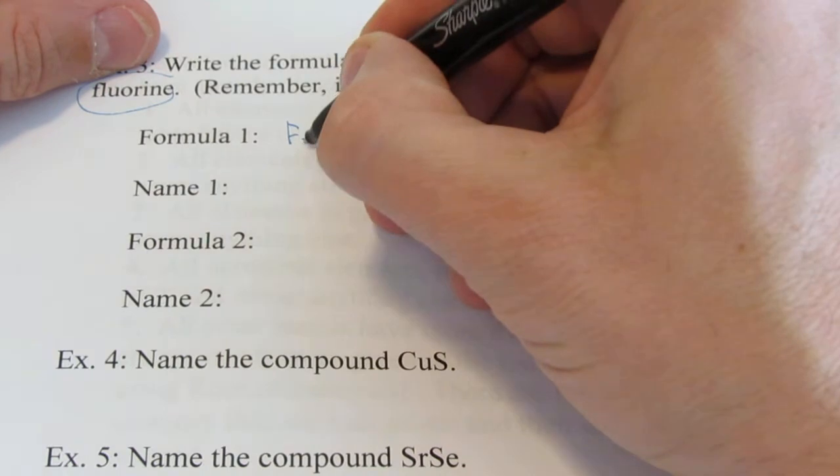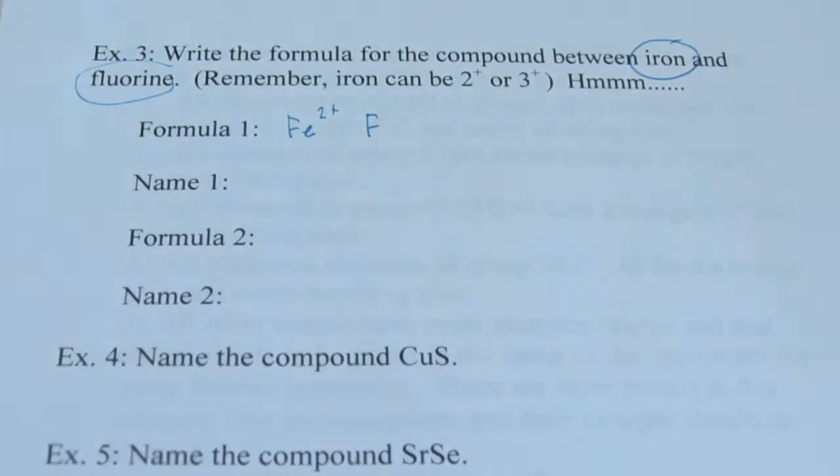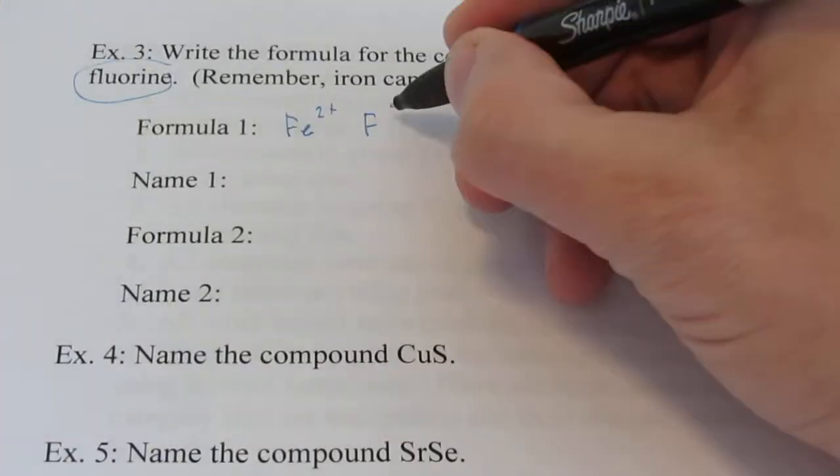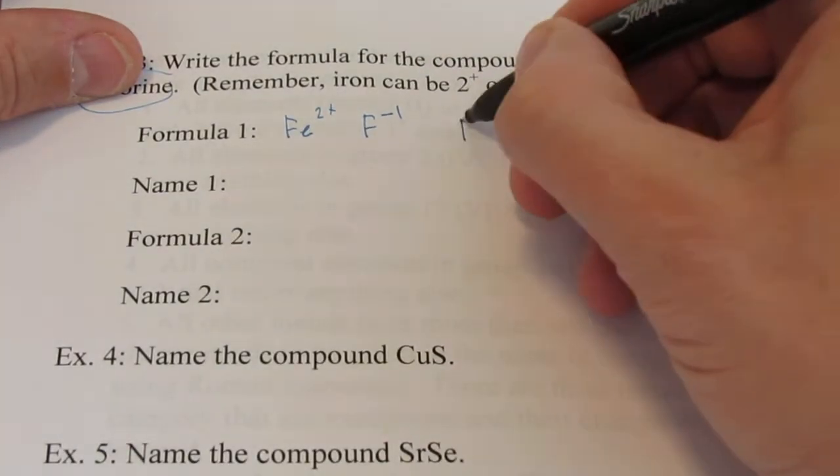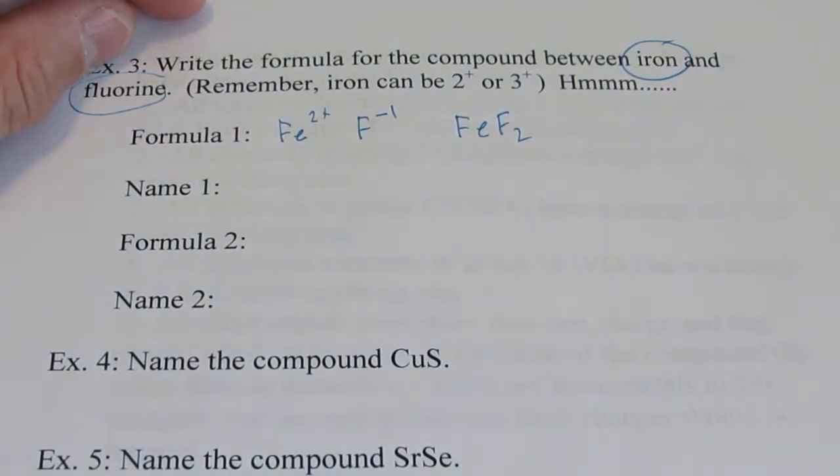Formula 1, we would have iron with a 2 plus. And of course my fluorine, let's check its charge out, has 9 wants to get to 10, is negative 1. So the formula would be FeF2. That would be formula 1.